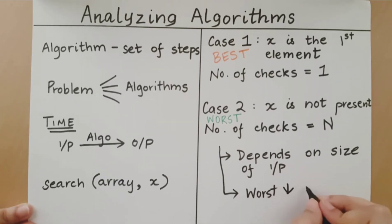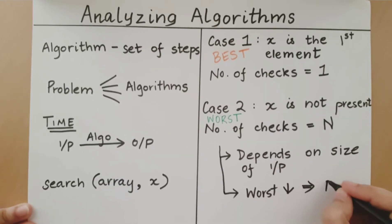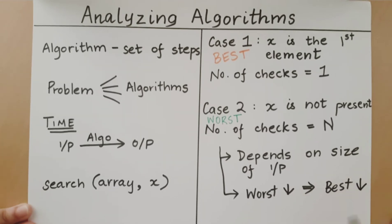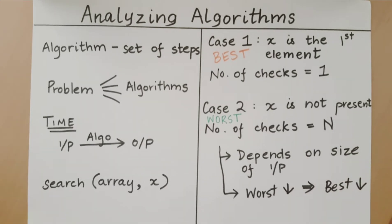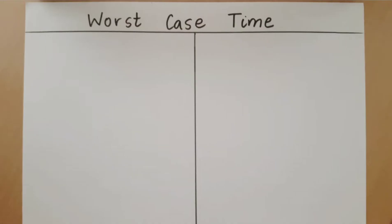So when the worst case time goes down, this implies that the best case time will also go down. Now that we are convinced that the worst case time is what we must be concerned with while analyzing algorithms, the question arises: how do we calculate the worst case time given an algorithm? This can be done by counting operations in the worst case.